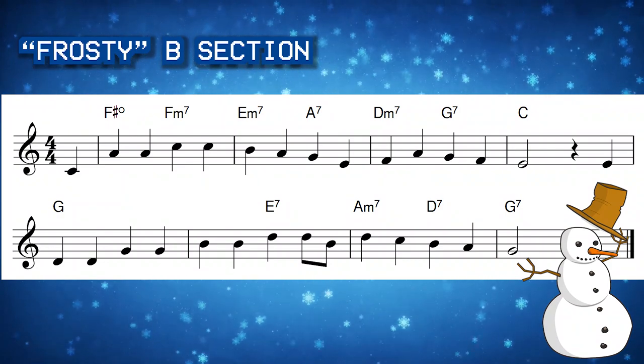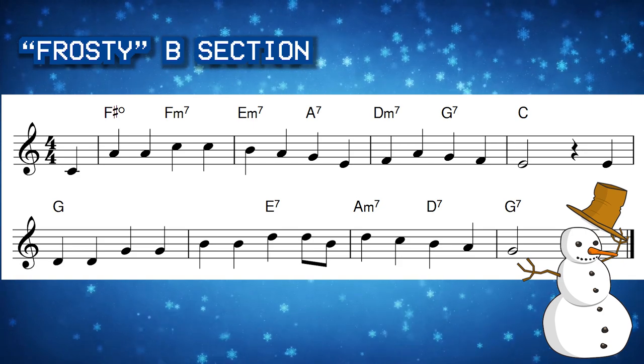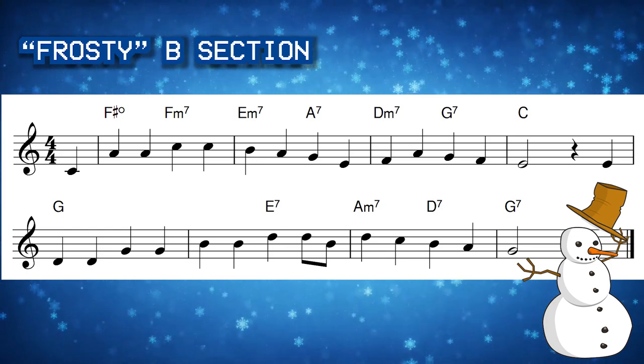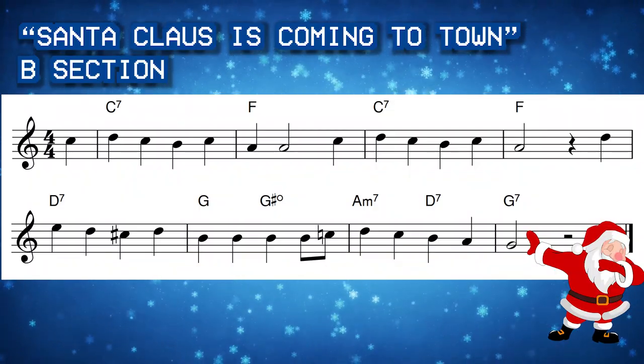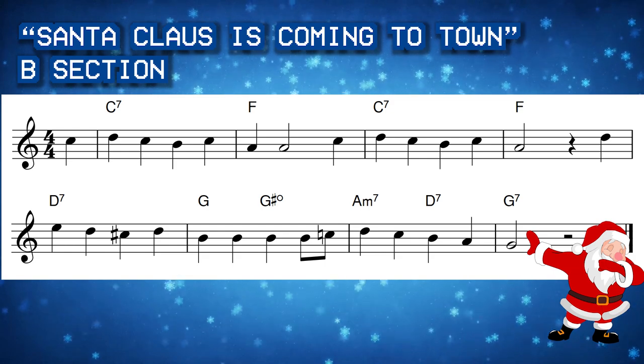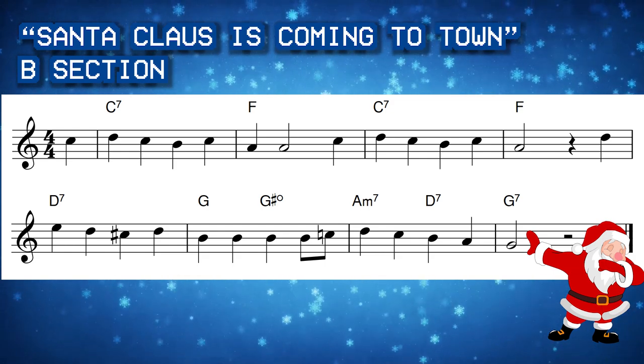But there's a much more significant thing happening in the B sections of these three songs. So the first thing we'll do is listen to the B section of Frosty the Snowman on its own. Now let's listen to the B section of Santa Claus is Coming to Town on its own, and pay attention to the last two measures. So these two songs have the exact same measure of music at the end of their B section leading back into their A section.